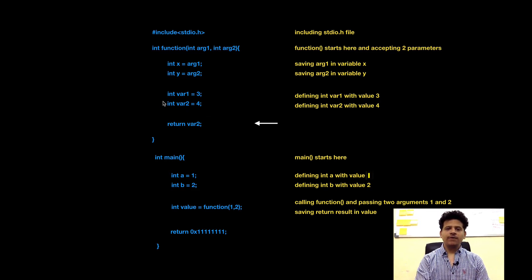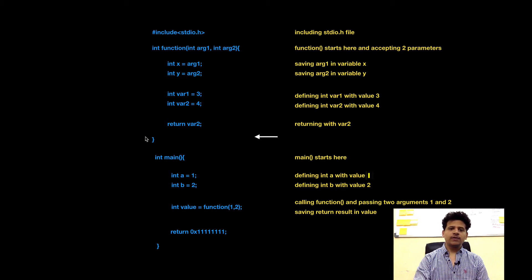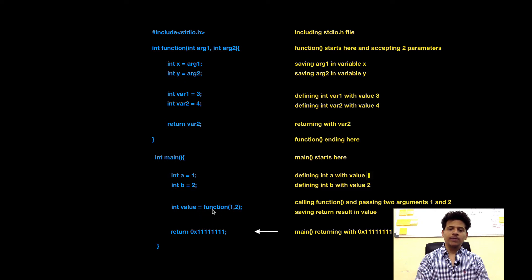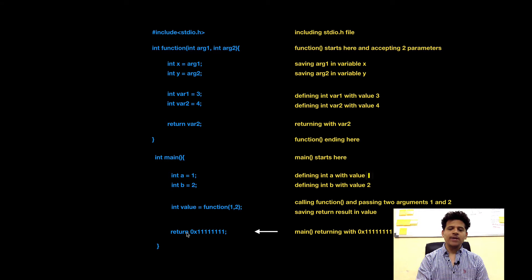Then function is returning the value of var2 to the main. Function is ending here. We are back in main. Main will save the value returned by function into the new variable integer value. And then main will return with ones, and main will end here.